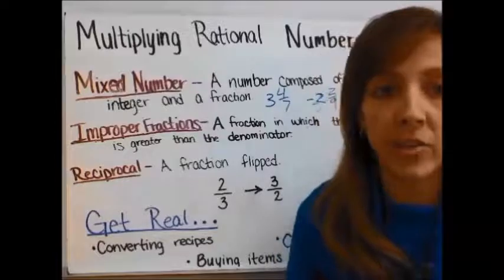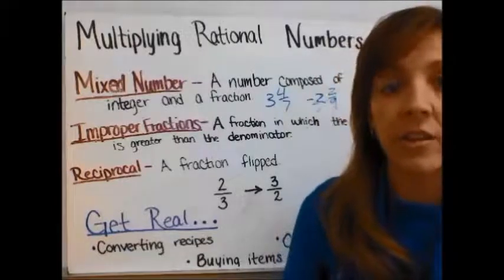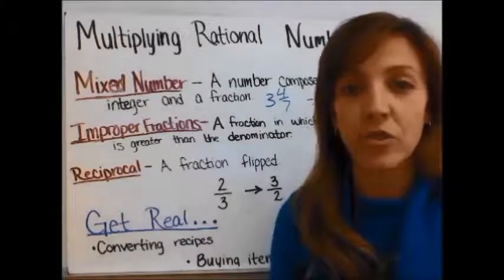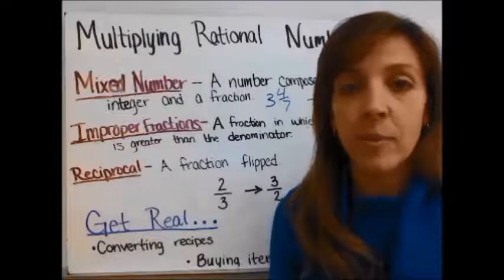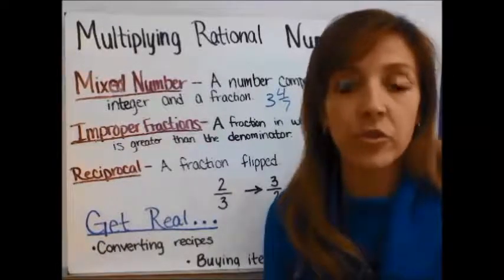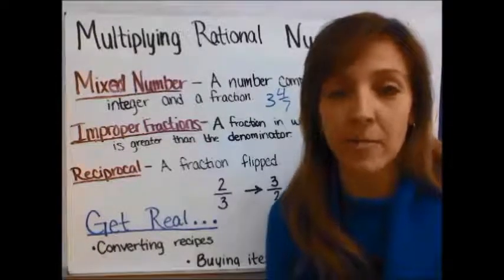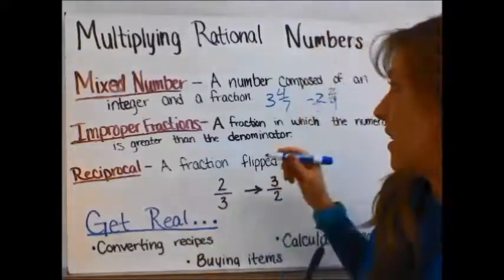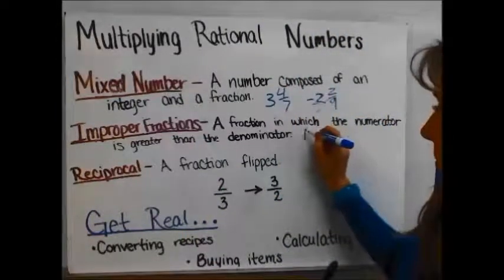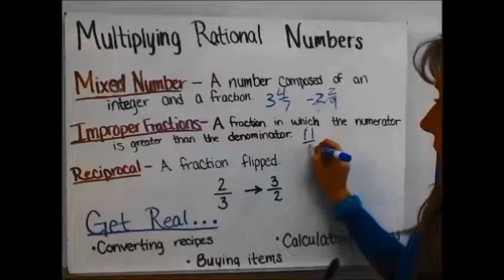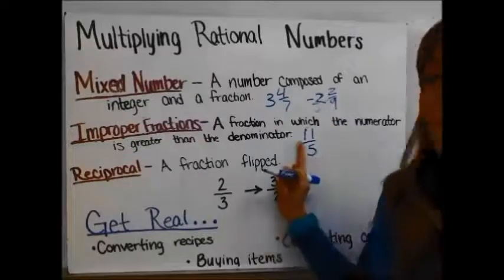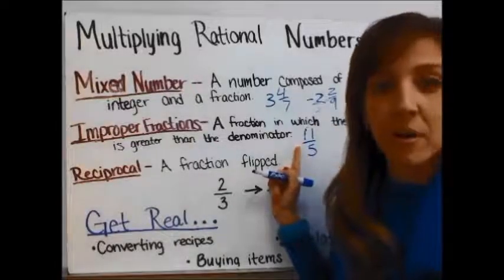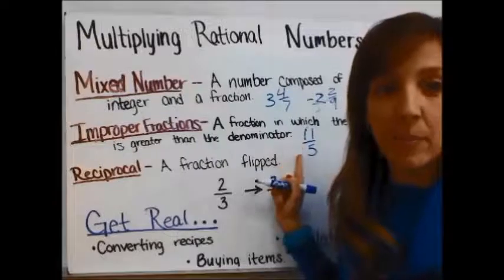Improper fractions. An improper fraction is a fraction in which the numerator is larger than the denominator. Remember, your numerator is your top number and your denominator is your bottom number in a fraction. So when the numerator is larger — for instance in 11/5, the numerator is larger — this is called an improper fraction.